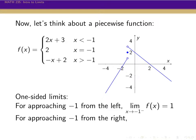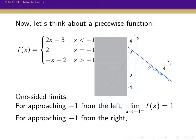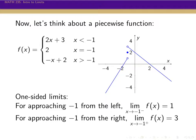What about approaching minus 1 from the right? We've darkened off everything to the left of minus 1 and focus on the right side. As we get closer and closer to minus 1 from the right, the y values are getting closer and closer to y equals 3. To express this, we use a plus sign superscript instead of a minus sign — the plus sign signifies we're approaching only from the right. And so the value of the limit as we approach only from the right equals 3.